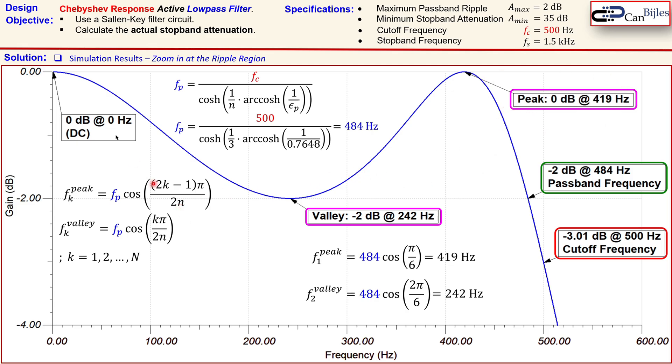All right, this was our example, considering the Chebyshev response active low-pass filter. We have calculated our component values using the Sallen-Key filter configuration. We also verified our findings using the SPICE simulations. If you have any questions, please let me know. I will try to answer them as soon as possible.